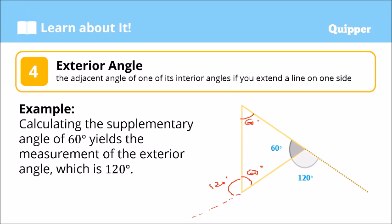And if we extend this line, its adjacent exterior angle is also 120 degrees. So all three exterior angles of this equilateral triangle are each 120 degrees.